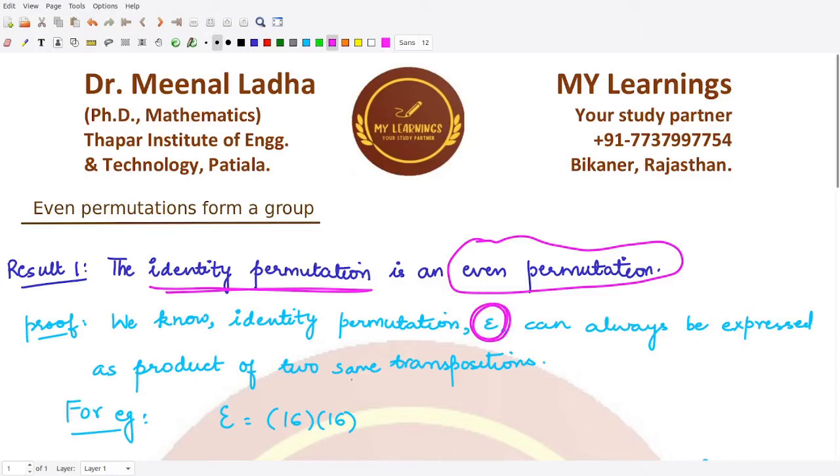We know the identity permutation, which we usually denote by ε, can always be expressed as product of two same transpositions. How is this so? Suppose we have some set A which has numbers 1, 2, 3, 4, 5, and 6. From this set A we are now constructing the set S₆, which would contain all permutations of the elements 1 to 6.